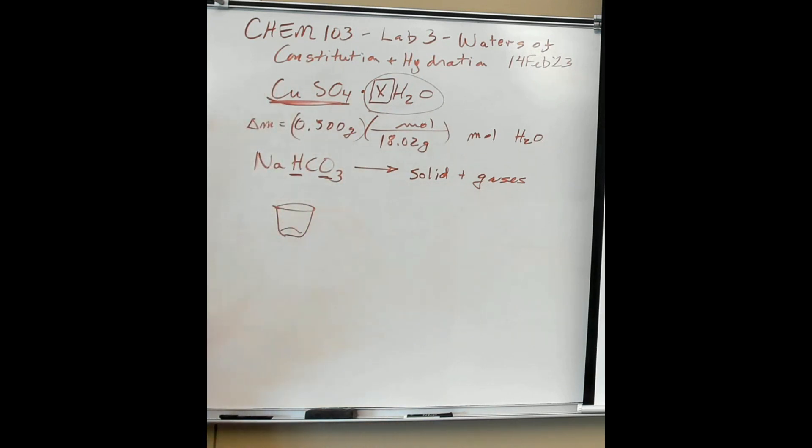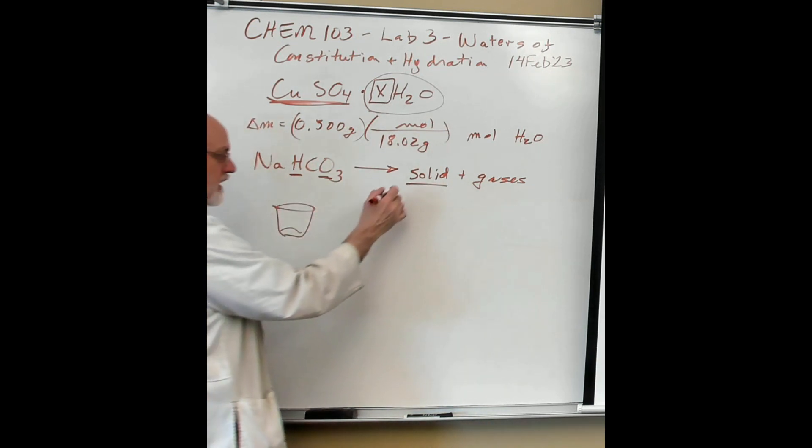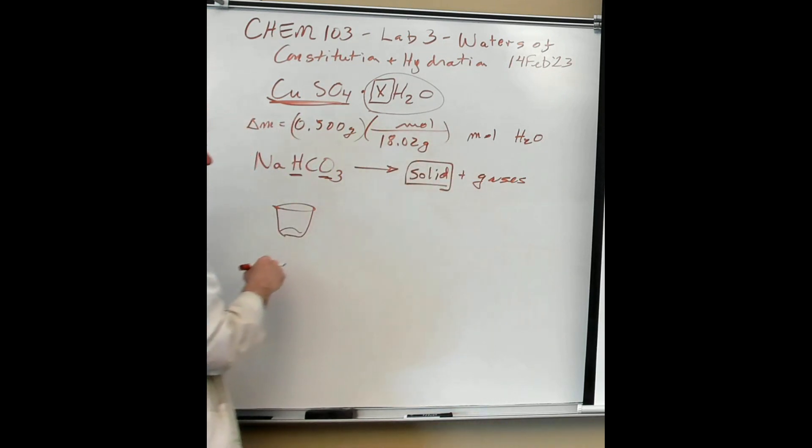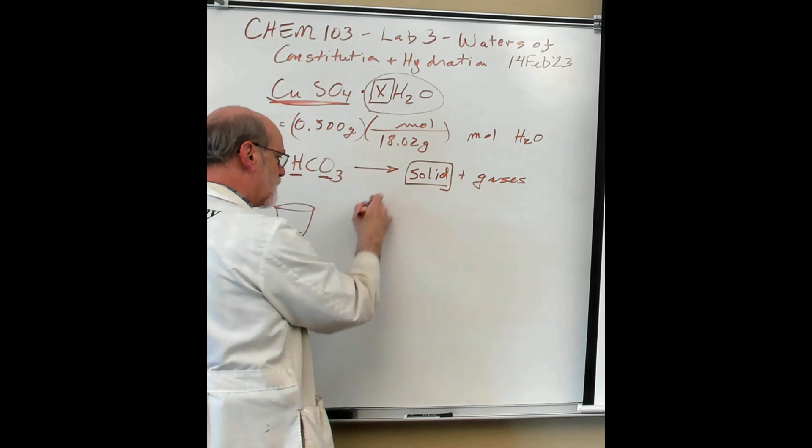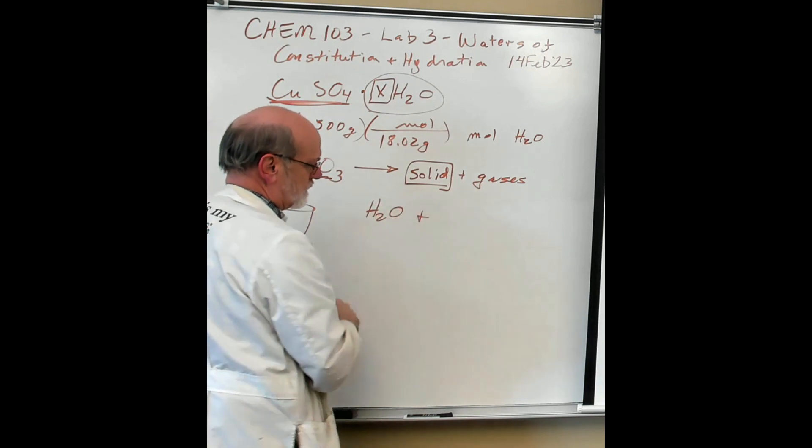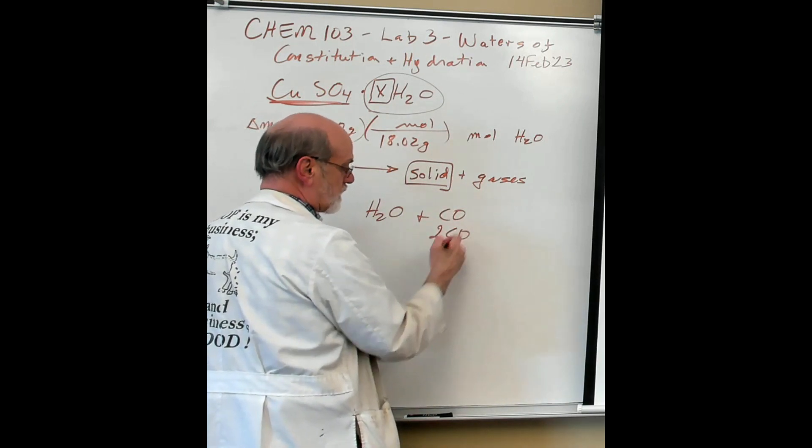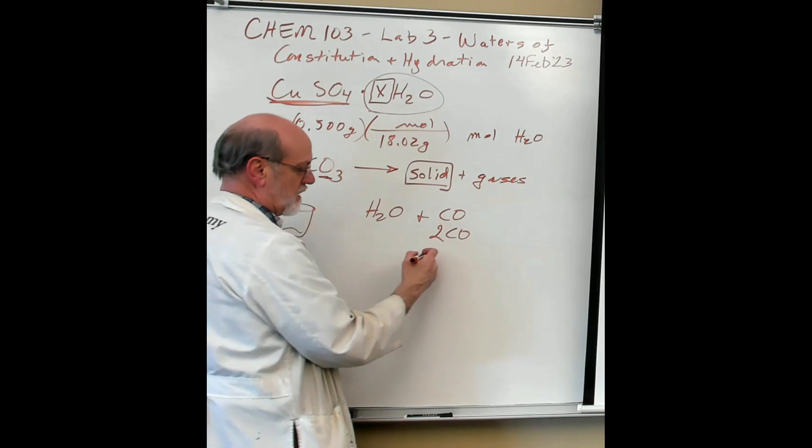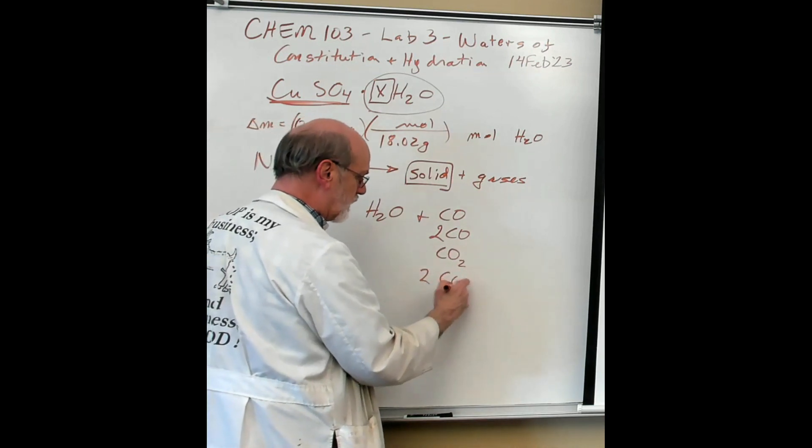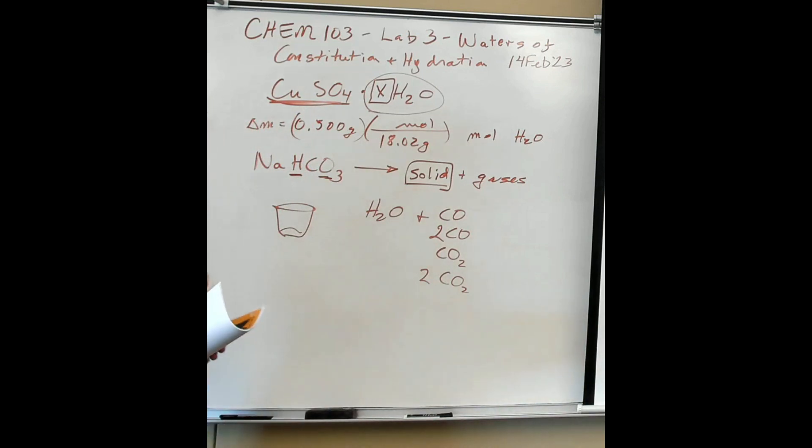This one is a little more difficult. You're going to get a before and after weight. And you're going to get a mass of solid after you weigh it the second time. You're going to get a mass of solid. We've got to figure out what that solid is made of. And to do that, you need to speculate about what these gases are. We know one of them is going to be water. But what's the other one? Well, the other one could be carbon monoxide or two moles of carbon monoxide. Or it could be carbon dioxide or two moles of carbon dioxide. Those are the four possibilities that are discussed in here.